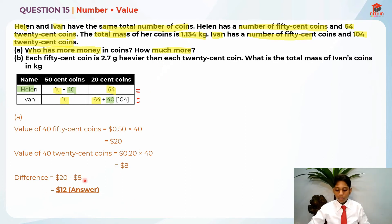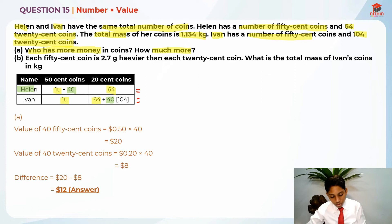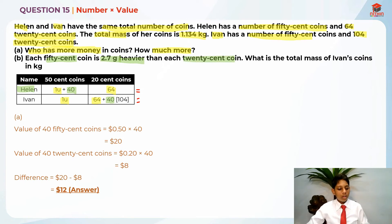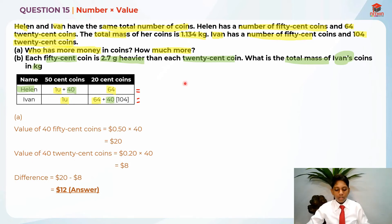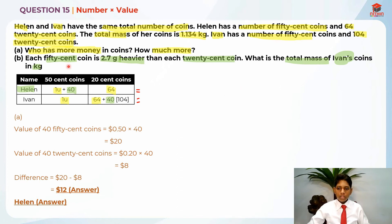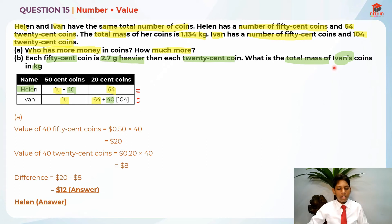Helen has $12 more. Now let's move on to Part B. Each 50-cent coin is 2.7 grams heavier than each 20-cent coin. The question asks for the total mass of Ivan's coins in kilograms. I'll use the same concept from Part A — the only differing factor is the 40 fifty-cent coins versus the 40 twenty-cent coins. I need to find this 1 unit first.